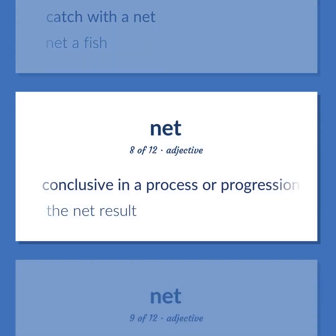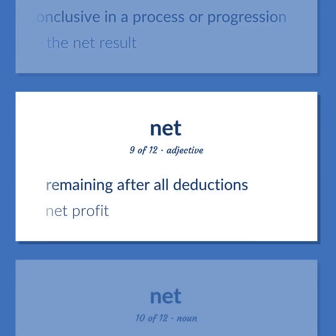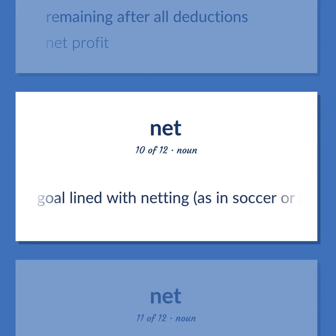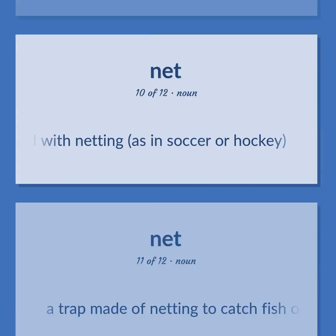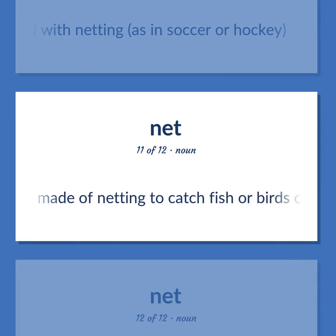Conclusive in a process or progression. The net result. Remaining after all deductions. Net profit. A goal lined with netting, as in soccer or hockey. A trap made of netting to catch fish or birds or insects.